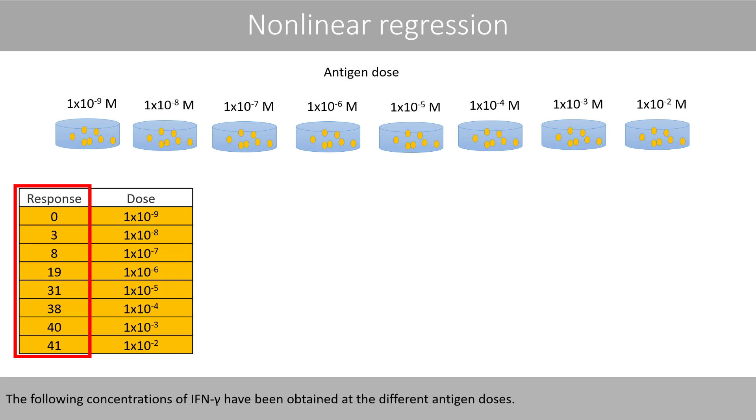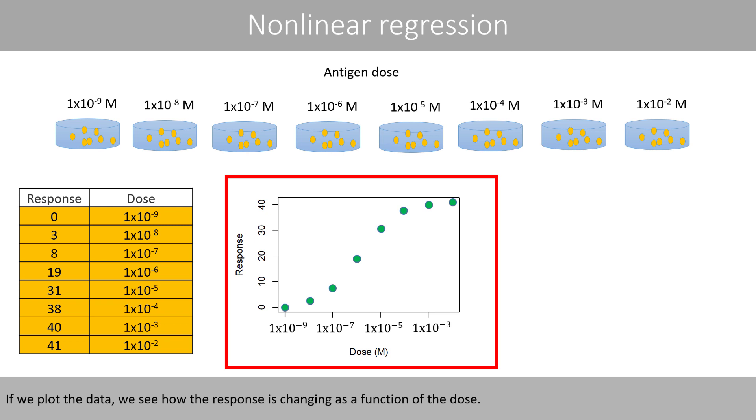The following concentrations of interferon gamma have been obtained at the different antigen doses. If we plot the data, we see how the response is changing as a function of the dose.